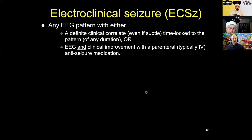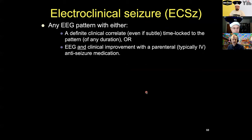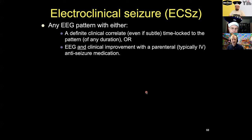That was electrographic seizures and electrographic status. The other category is electroclinical seizure — any EEG pattern, any of them, that doesn't have to be a rhythmic or periodic pattern and doesn't have to qualify as a seizure, but any EEG pattern that has a definite clinical correlate that's time-locked to the pattern. The clinical feature is there when the pattern's there and not there when the pattern's not there. That can be any duration — even three seconds counts as a seizure if there's a definite time-locked clinical correlate. It can be subtle, like just twitching of a finger, as long as it's time-locked to the pattern.